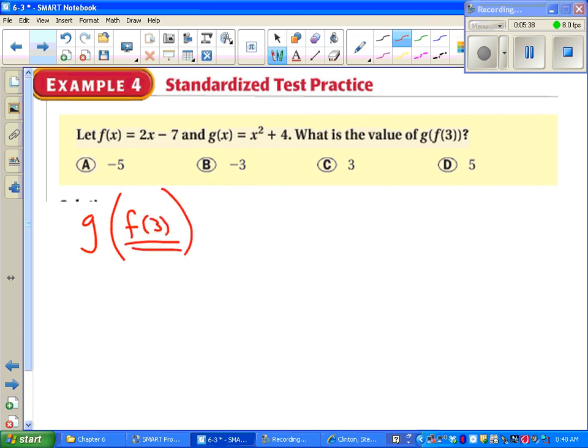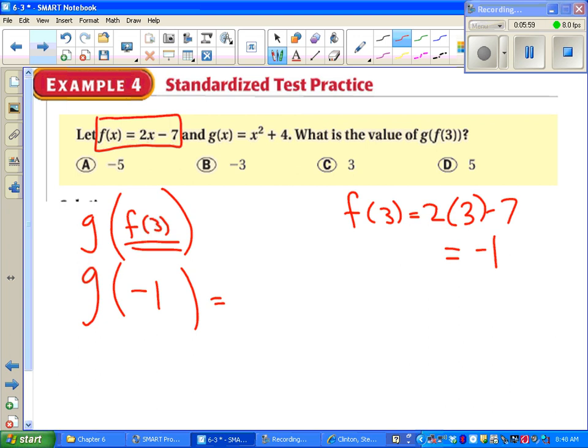Let's find G of F of 3. We work our way from the inside out on these. So first we figure out F of 3. And we can do that off to the side. We know F of X is 2X minus 7. So off to the side we can figure out F of 3 is 2 times 3 minus 7. We get negative 1. So going back to the original problem we replace F of 3 with negative 1. All that's left now is to figure out what G of negative 1 is. We know what G of X is. Done.